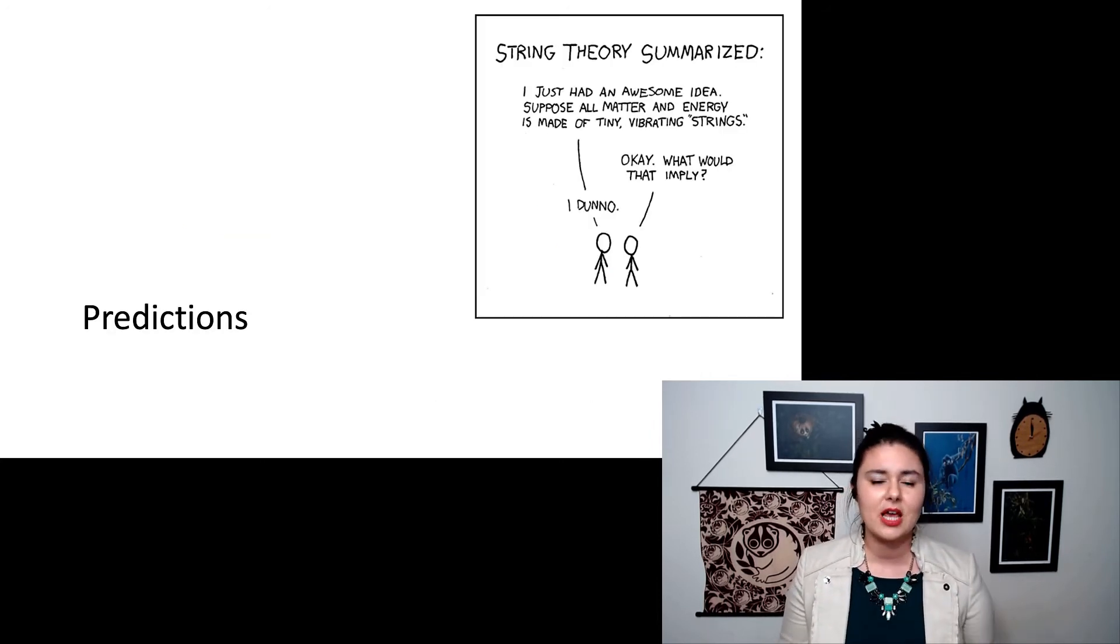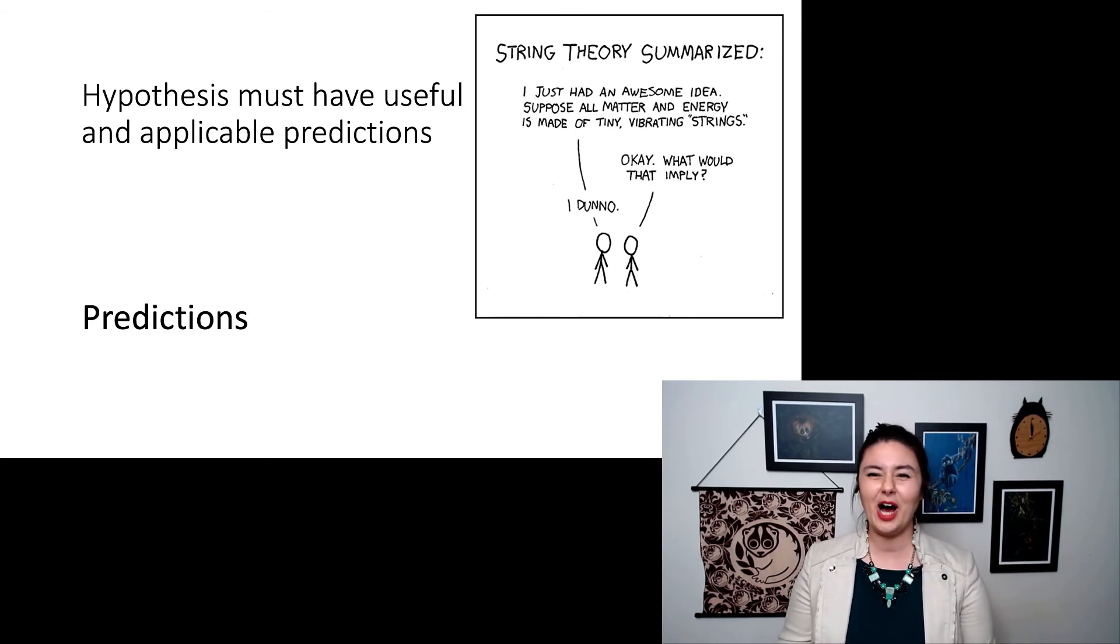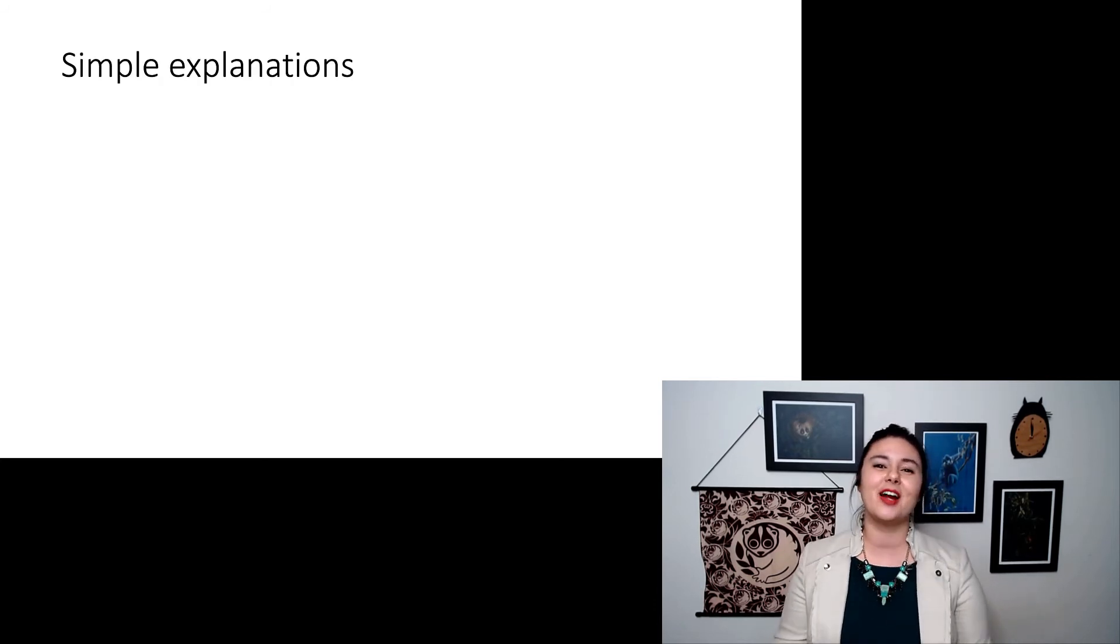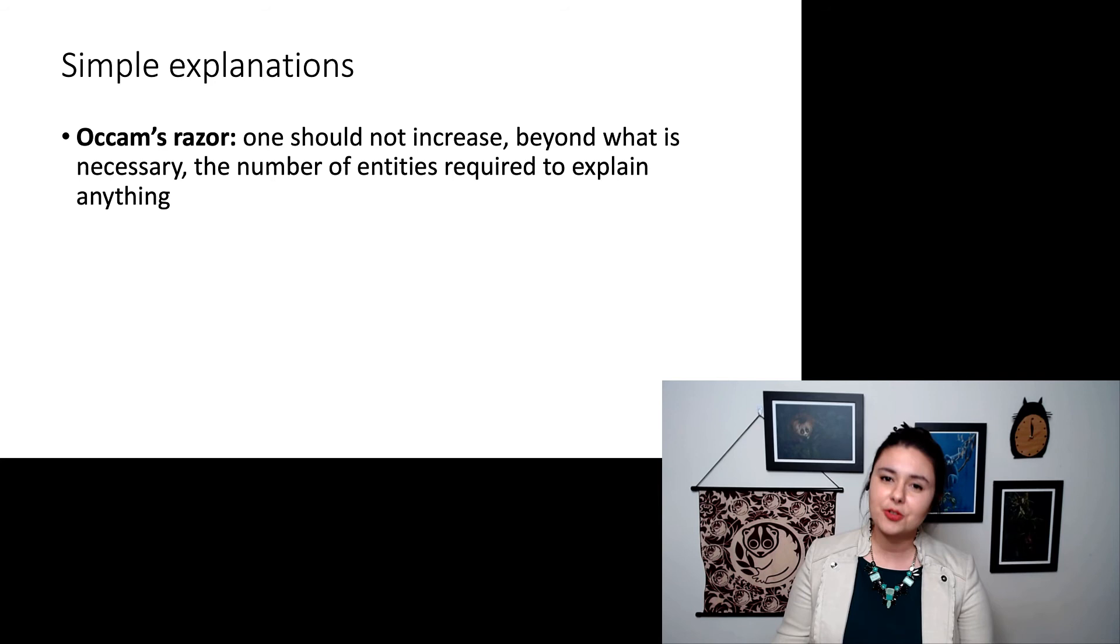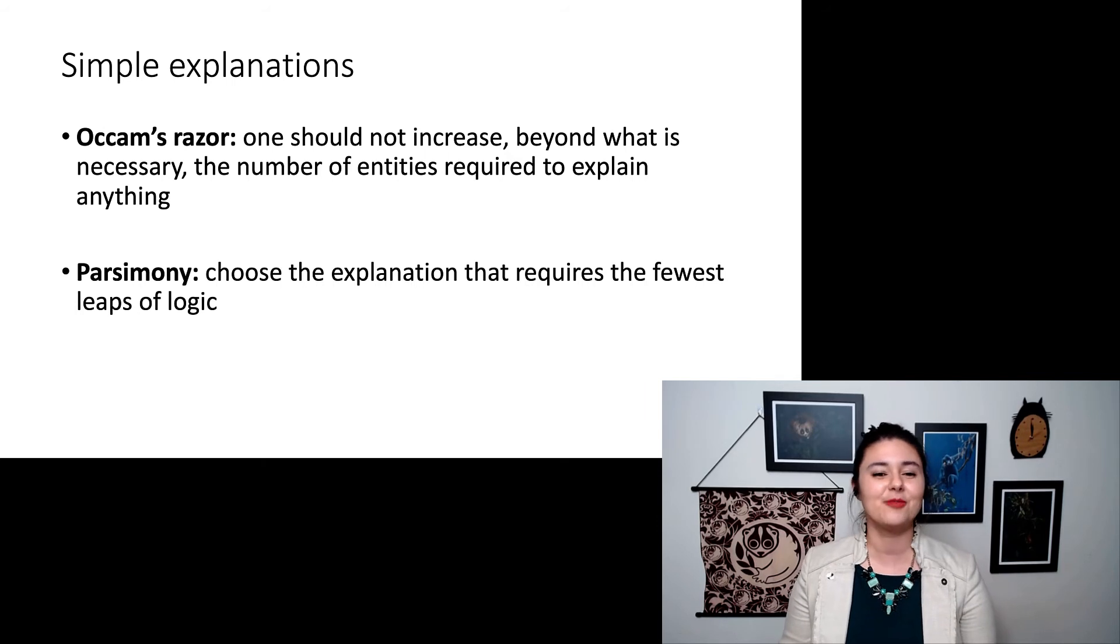Next, let's talk about predictions. A good hypothesis is meaningful. We want it to have applicable predictions to make meaningful sense of the world. I'm not particularly knowledgeable about string theory, but a lot of people like to poke fun at it because what's the point? And lastly, we do want our hypotheses to have simple explanations. If they're too complicated, when are we going to use them? There's two principles here. The first is Occam's razor: one should not increase beyond what is necessary the number of entities required to explain anything. Really just means simple is better. Related is parsimony - if you have multiple explanations that are possible, you want to choose the explanation that requires you to take the fewest leaps of logic. We use this especially when we're talking about phylogenetics.